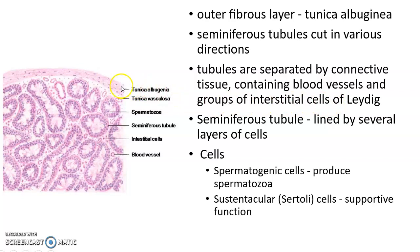As you can see in this picture, this is the tunica albuginea which is the outer fibrous layer. These are the seminiferous tubules. This is the connective tissue between the seminiferous tubules. These are the blood vessels and these are the interstitial cells of Leydig.